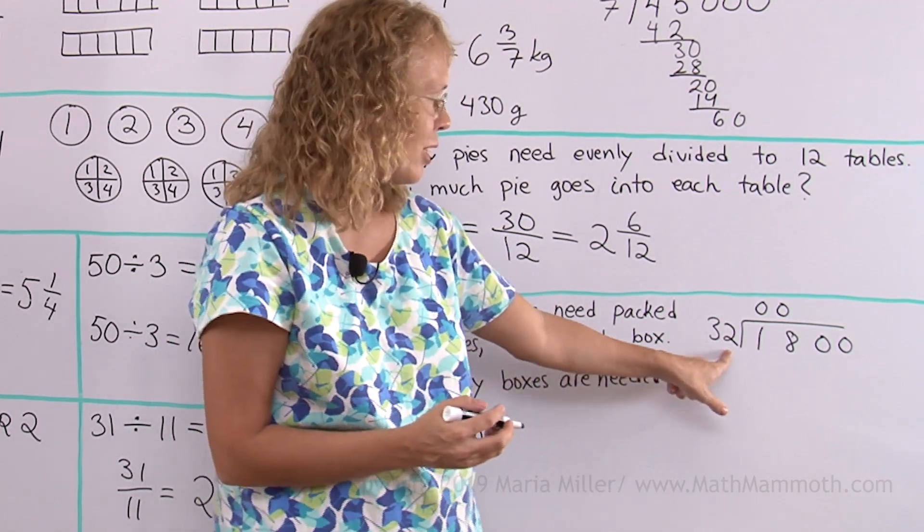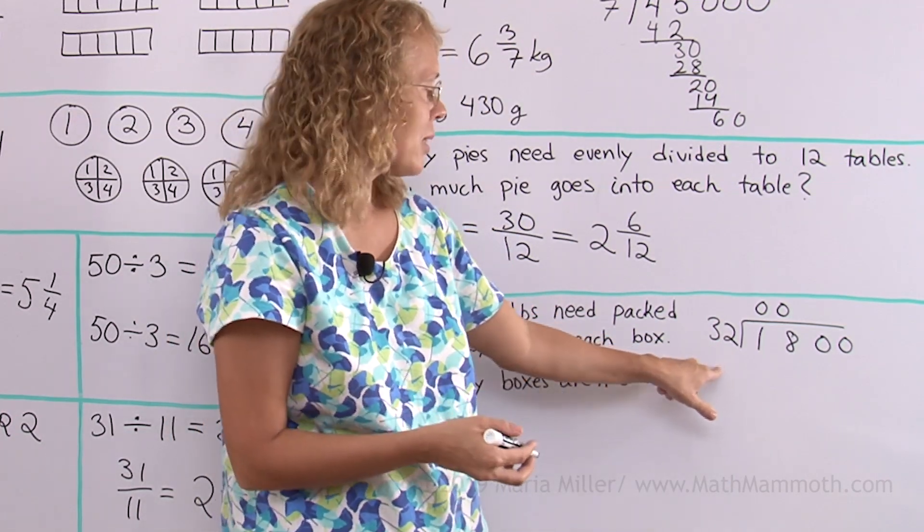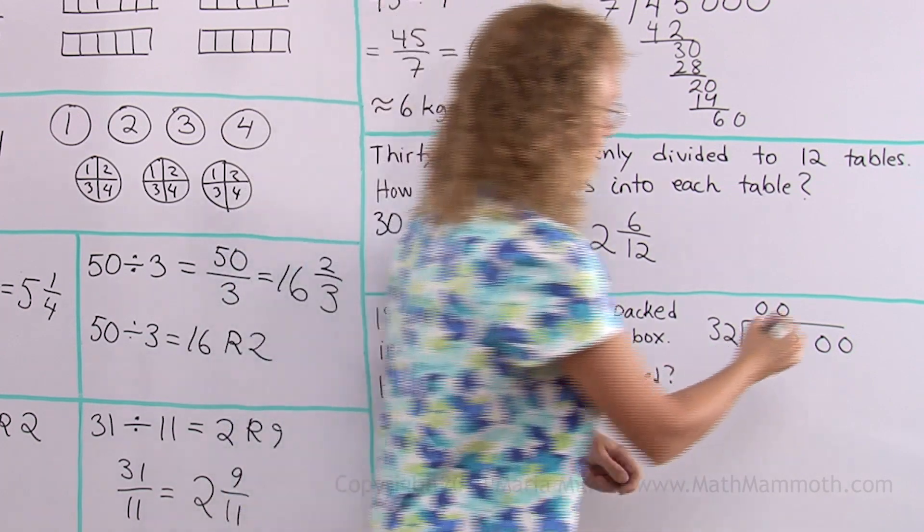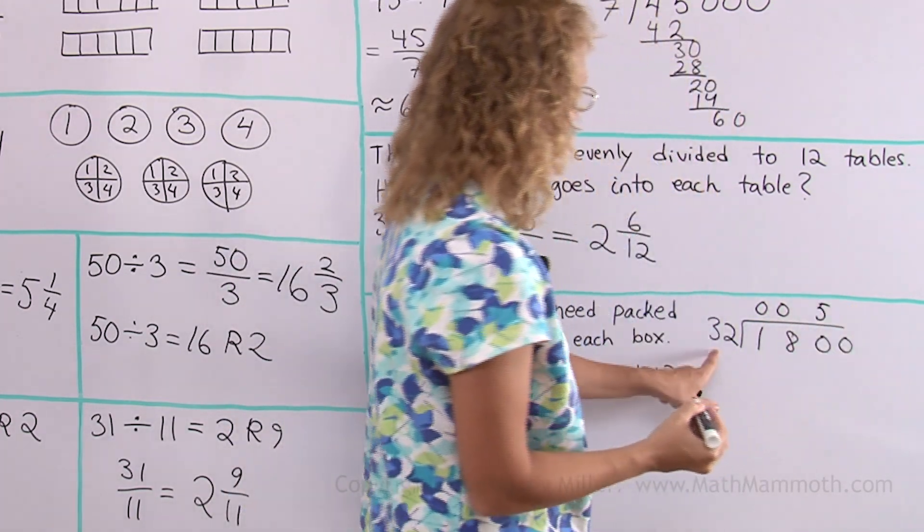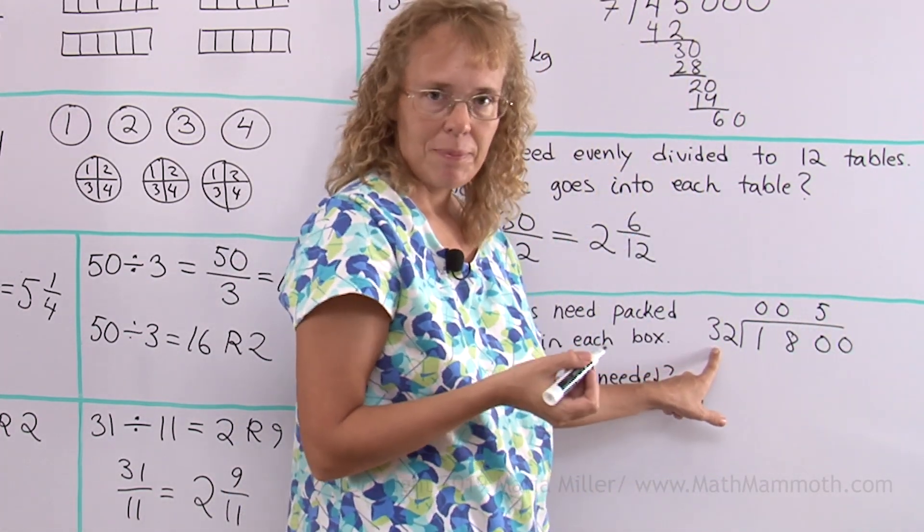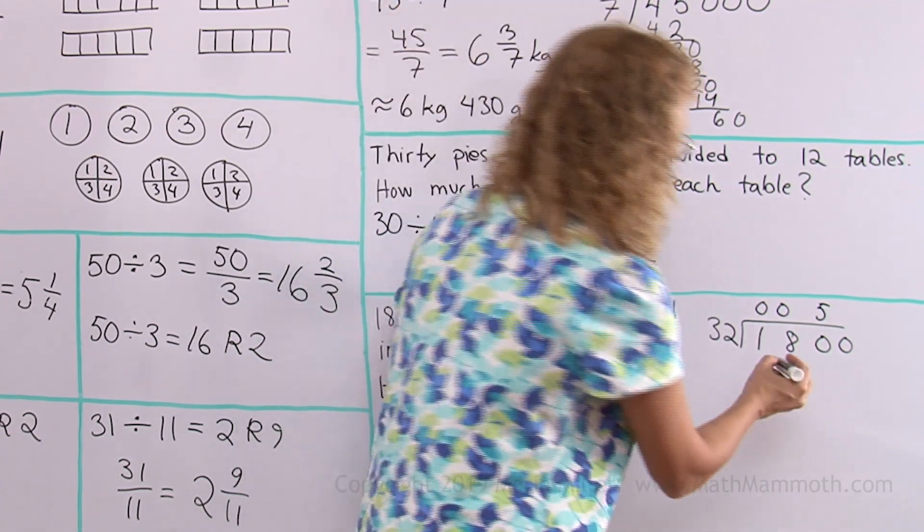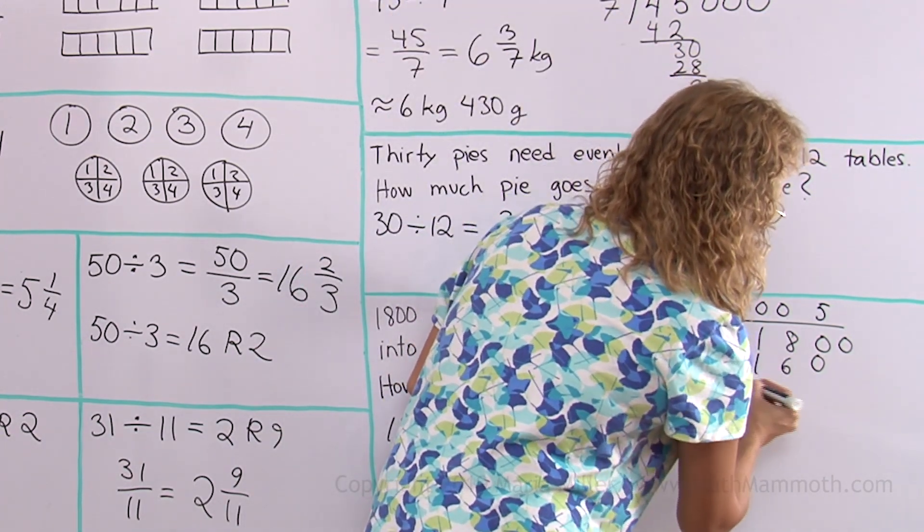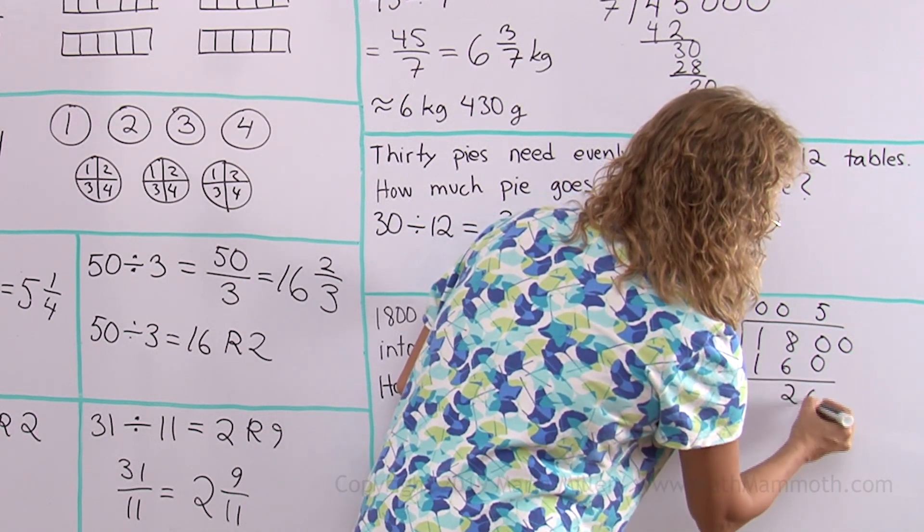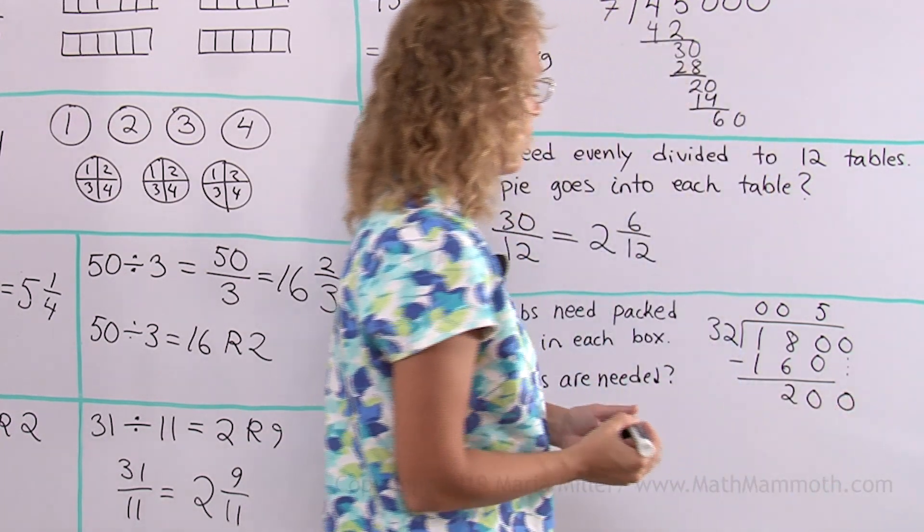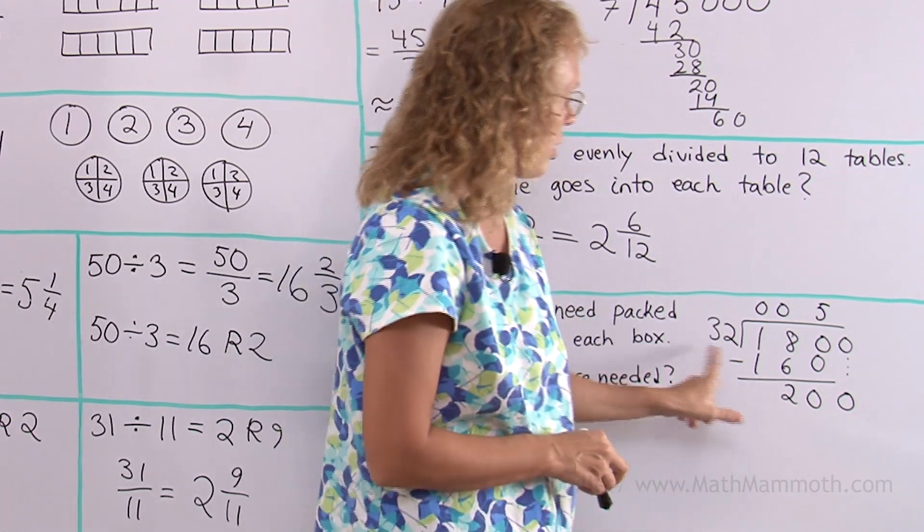If this was 30, it would go exactly six times, but since it's a little bit more, it goes five times. Five times 30 is 150. Five times two is 10. So 160 in total, I need to subtract here, I get 20. Then drop this last zero here, 200. How many times does it go to 200?